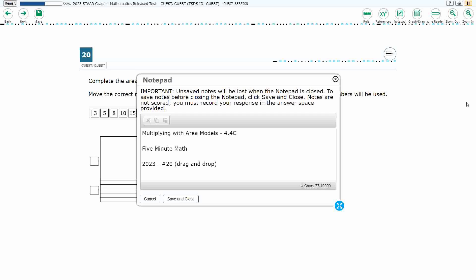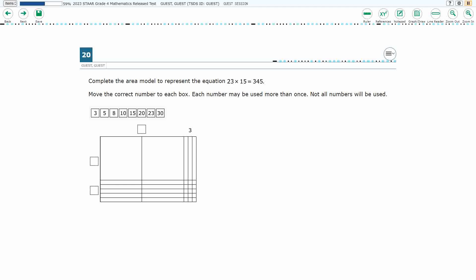Hello and welcome to 5 Minute Math. Today we are looking at the 4th grade concept of multiplying with area models. This is standard 4.4c in the great state of Texas and we are using item number 20, which is a new item type called drag and drop of the 2023 released STAAR test.